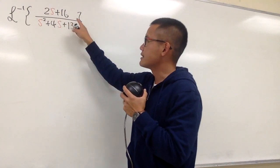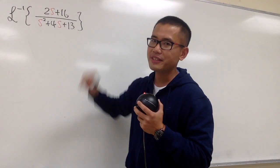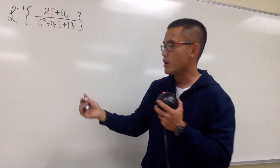Let's do the inverse Laplace of 2s plus 16 over s squared plus 4s plus 13. And you know the denominator here, we have to complete the square, right?